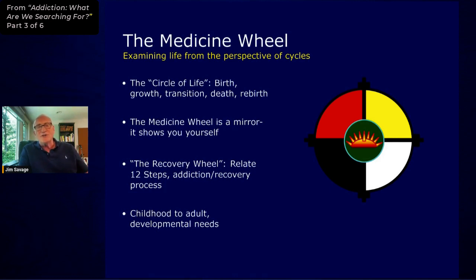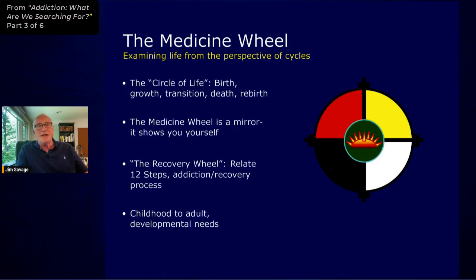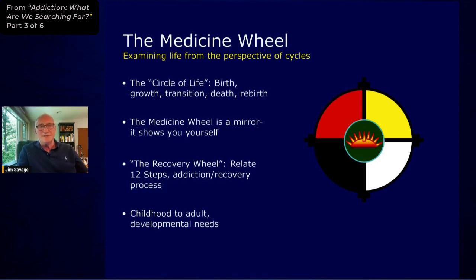Using this medicine wheel, we usually start in the east and go around the circle in the four directions — east, south, west, and north — which tie into those four stages of the cycle. Another concept here is that the medicine wheel is a mirror. It shows you yourself. When you're on the path and you're connected to life, life is about looking at yourself, and everything we experience reflects our own experience back. We're learning something about ourselves by how we see things. I also relate the medicine wheel to the 12 steps and the addiction recovery process.